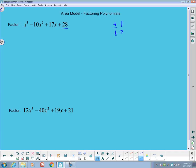plus or minus 2, plus or minus 4, plus or minus 7, plus or minus 14, plus or minus 28. Those are all my possible rational roots. That's a lot there to choose from.